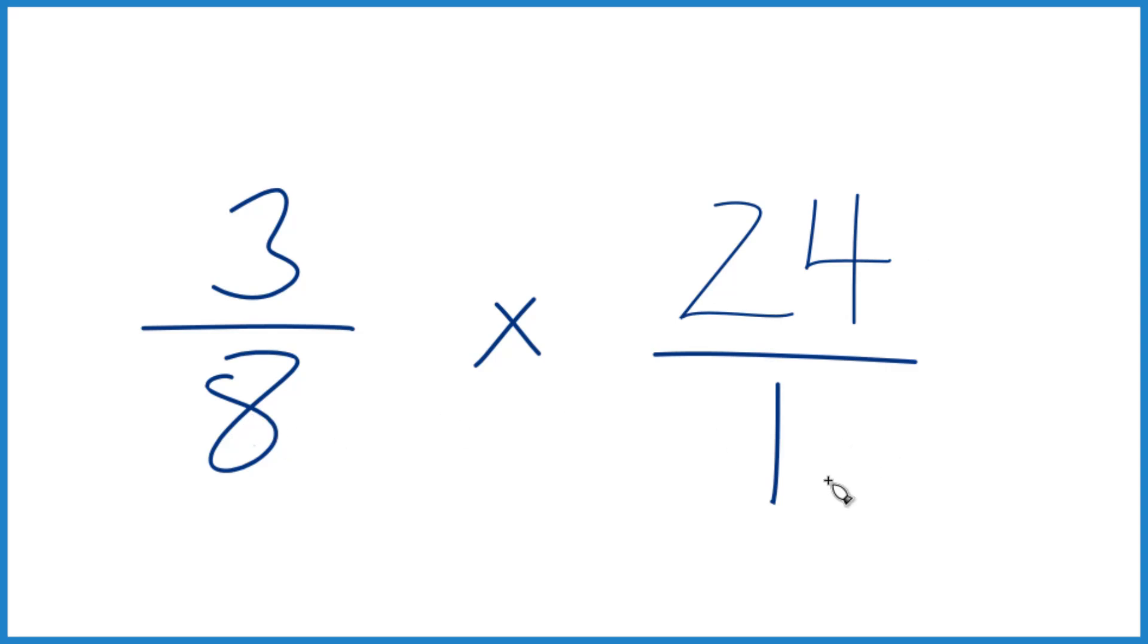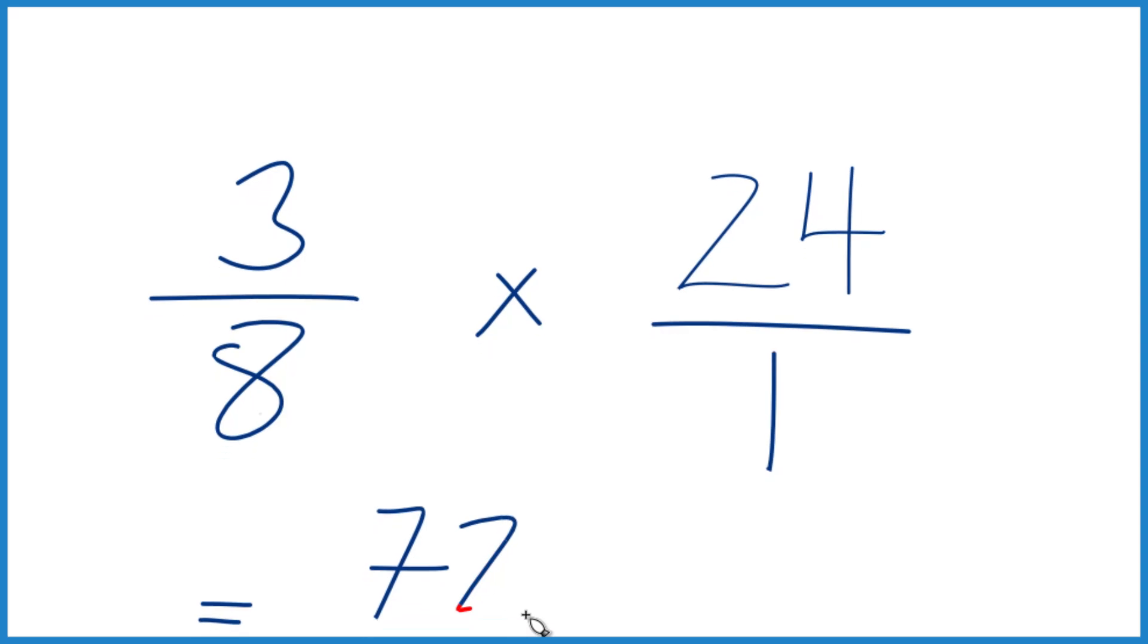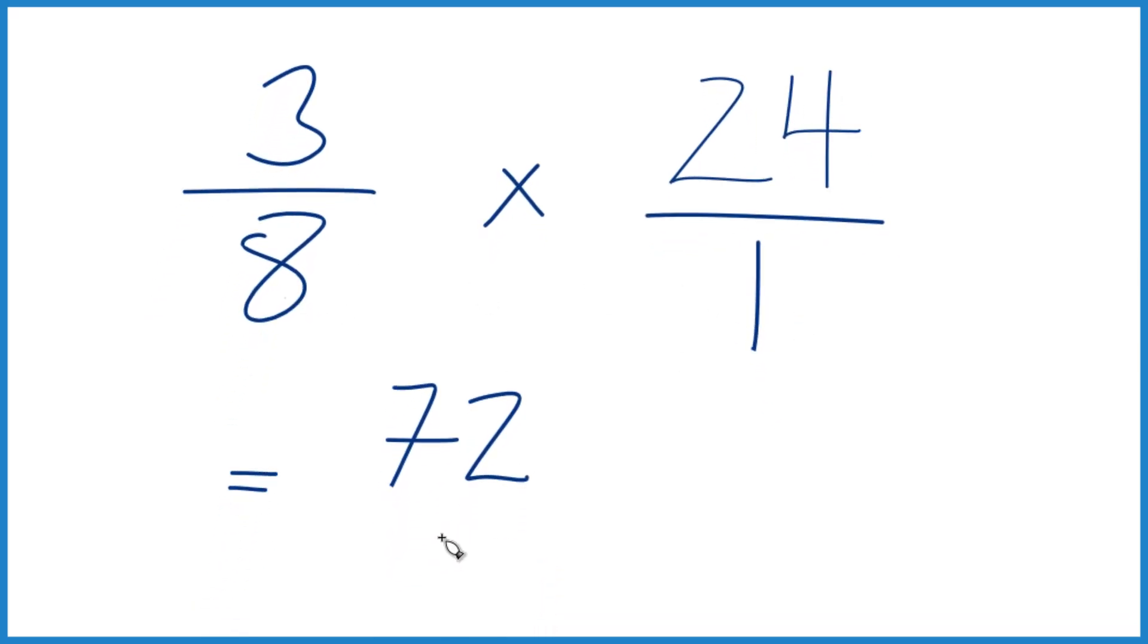but now the numerators and the denominators, they line up. That's nice because we're going to multiply the numerators. 3 times 24 is 72, and 8 times 1 is 8.